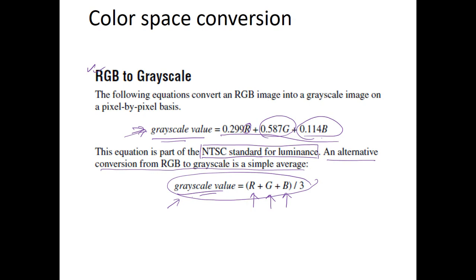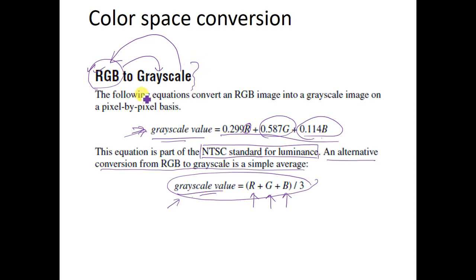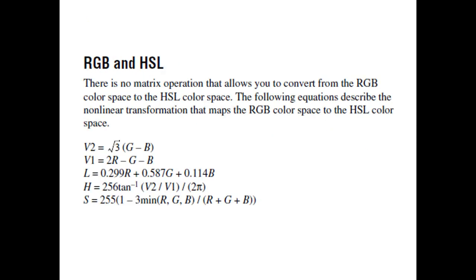An important point is that once you convert the RGB value to a grayscale value, you lose all the color information and cannot get back the RGB values. However, this is true only for the RGB-to-grayscale conversion. In other color space conversions this is not true — you can go from model one to model two and back again to model one, because there is color information in both spaces.